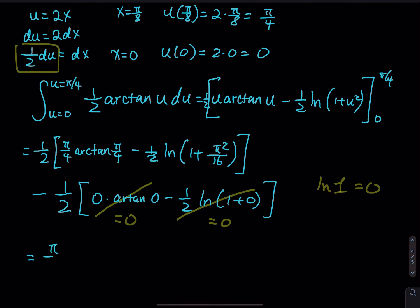So we have π over 8, and then arc tangent. The arc tangent π over 4, you don't need to approximate that. Keep it in there. And then 1 over 4 ln, 1 plus π over 16. That's it. That's the final answer.